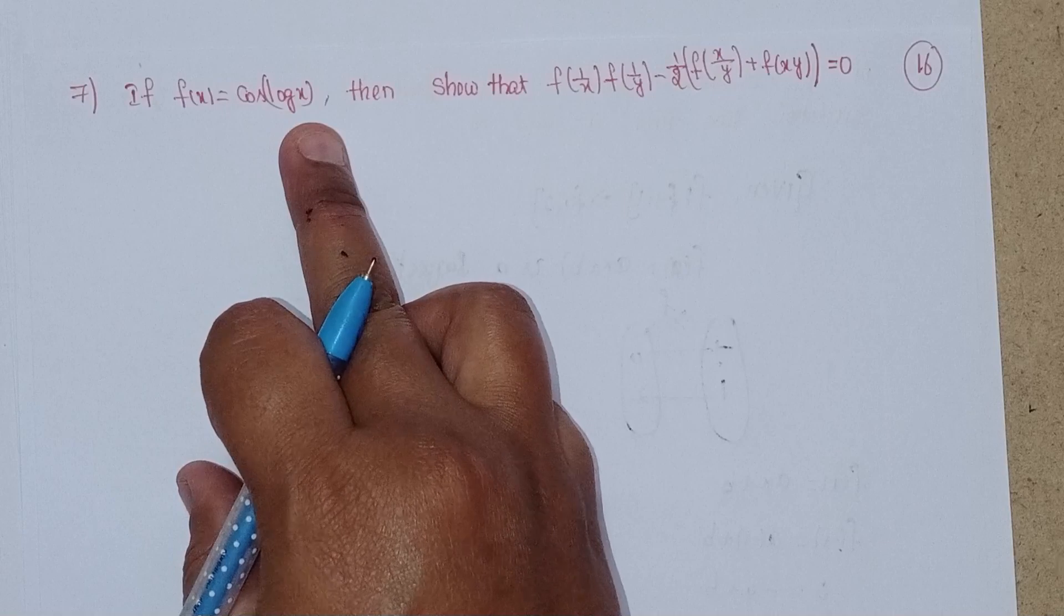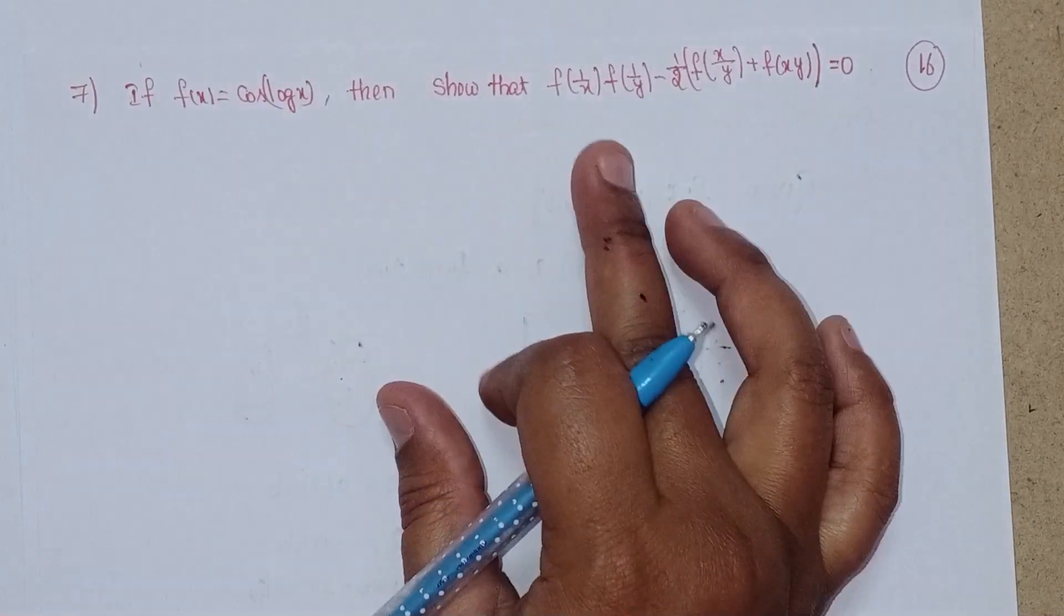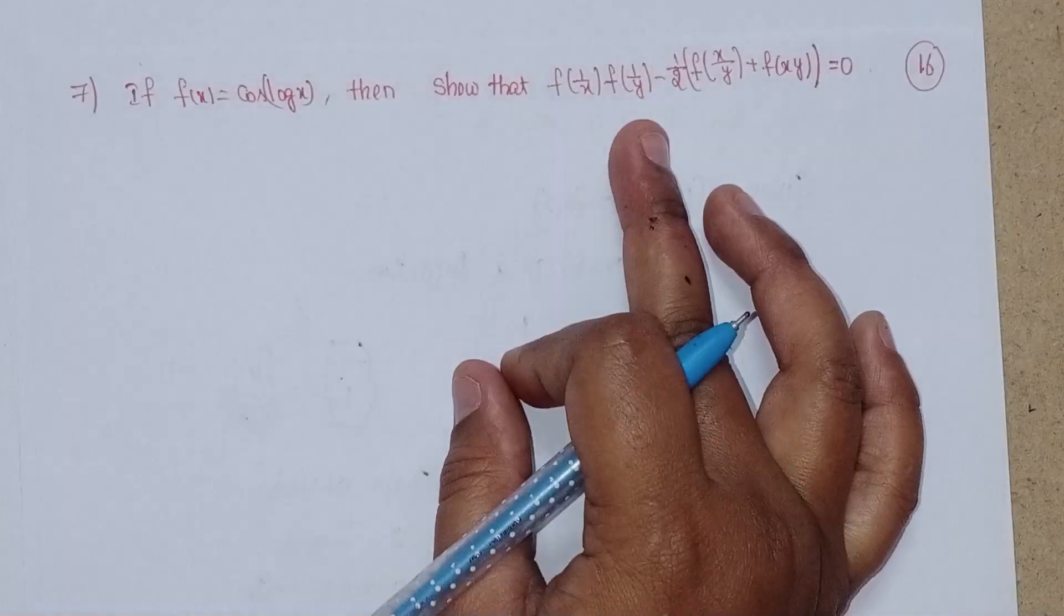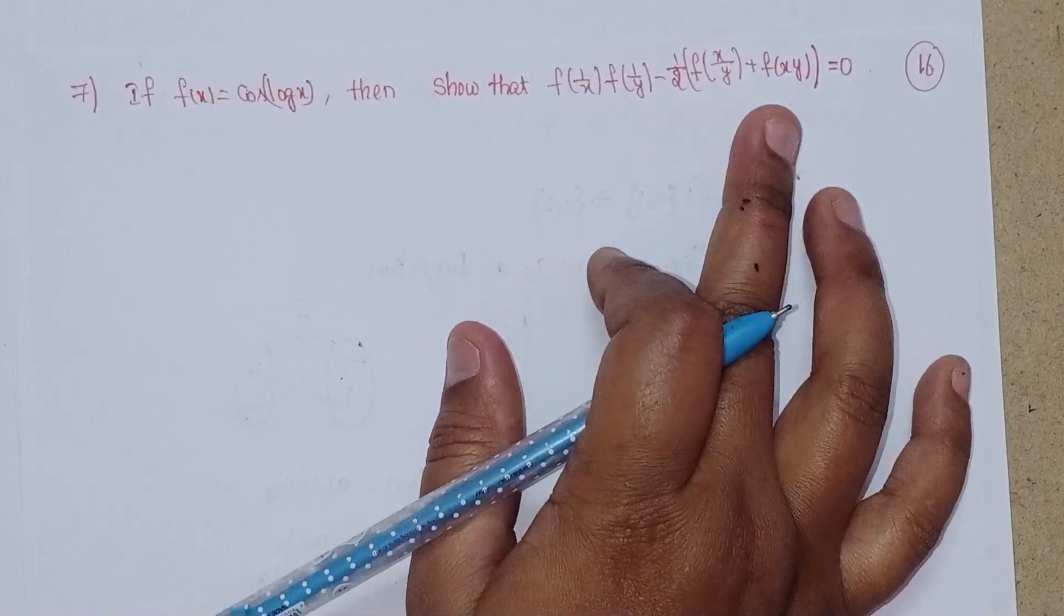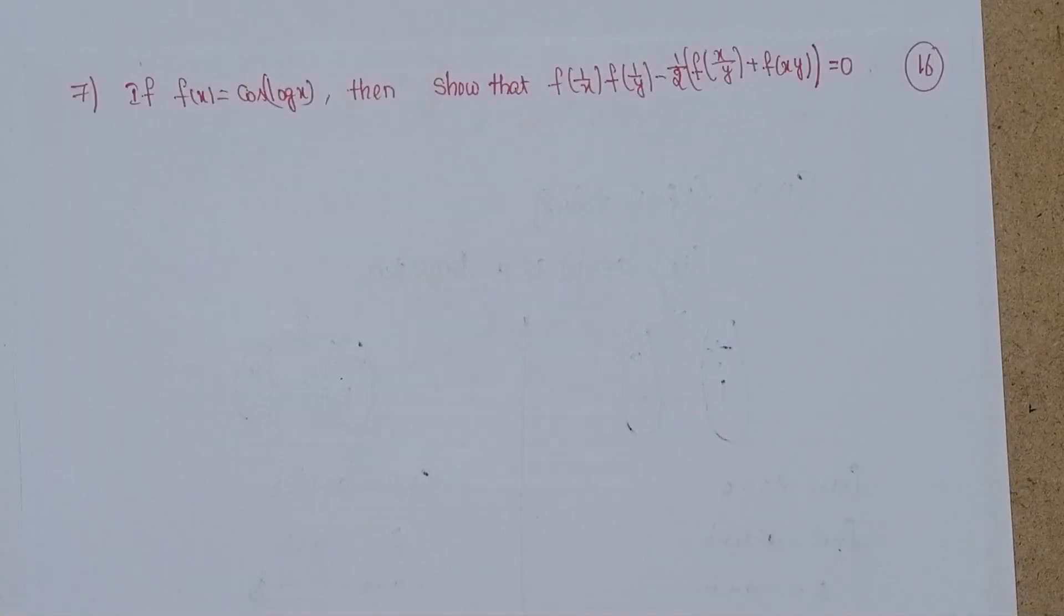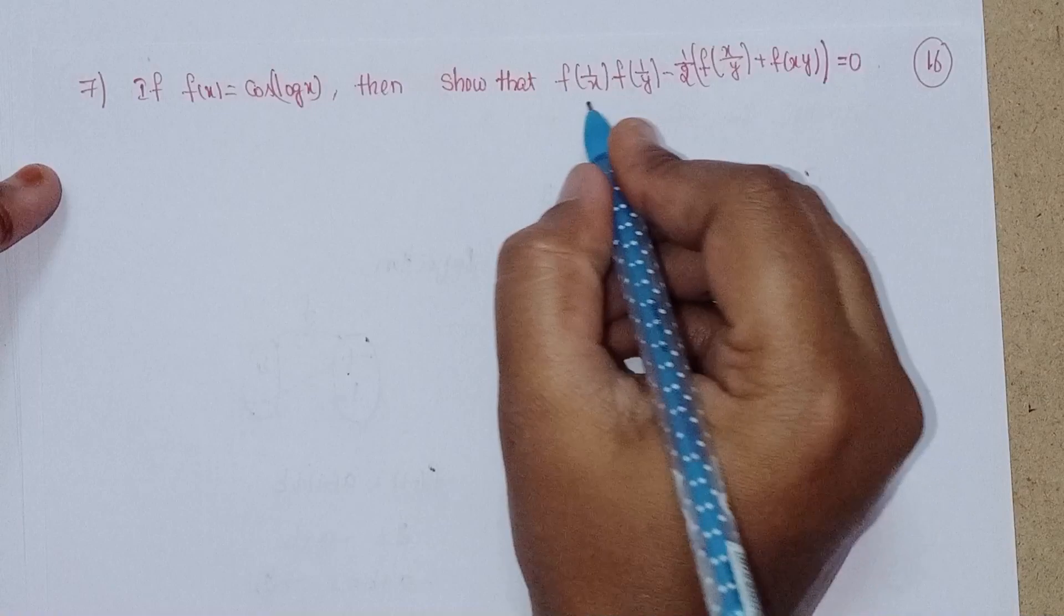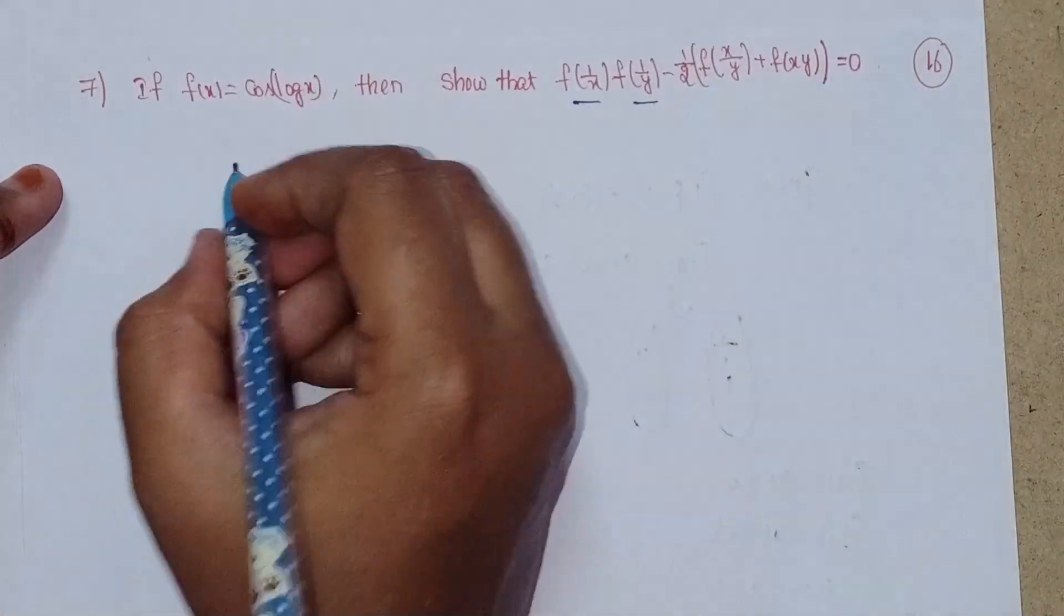Given f(x) = cos(log x), we need to prove that f(1/x) * f(1/y) - 1/2 * [f(x/y) + f(xy)] = 0. First, we'll find f(1/x).